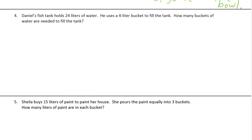Number four: Daniel's fish tank holds 24 liters of water. He uses a 4-liter bucket to fill the tank. How many buckets of water are needed to fill the tank? We're counting by fours until we get to 24.